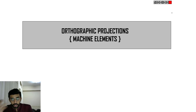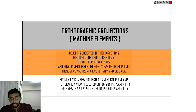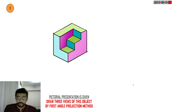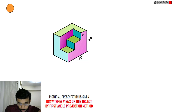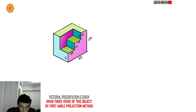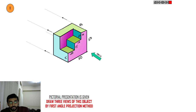Now let us see how the orthographic projection of some machine components is done. These three projection principles always stand intact — they won't change. You have a component like this with dimensions: width is 50, depth is also 50, and certain step features of 10 and 10, making 20 total, with the remaining being 30. The height is given as 15, 15 and 20, and the breadth as 40.